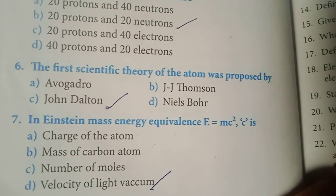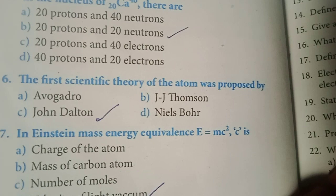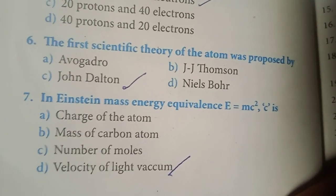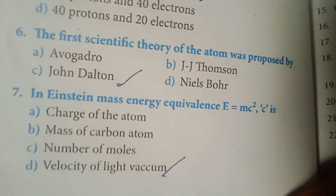In Einstein's mass-energy equivalence, E equals mc squared. Here C is the velocity of light in vacuum. Option D is the answer.